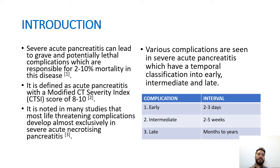Severe acute pancreatitis can lead to grave and potentially lethal complications, which are responsible for 2-10% mortality in this disease. It is defined as acute pancreatitis with a modified CT severity score of 8-10. Most life-threatening complications develop almost exclusively in severe acute necrotizing pancreatitis.